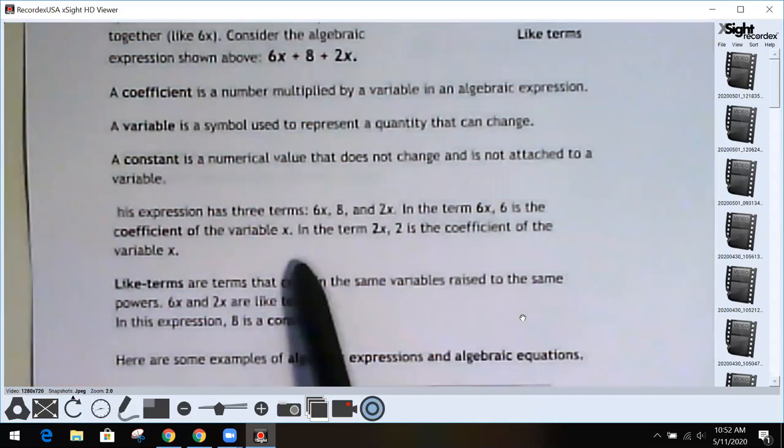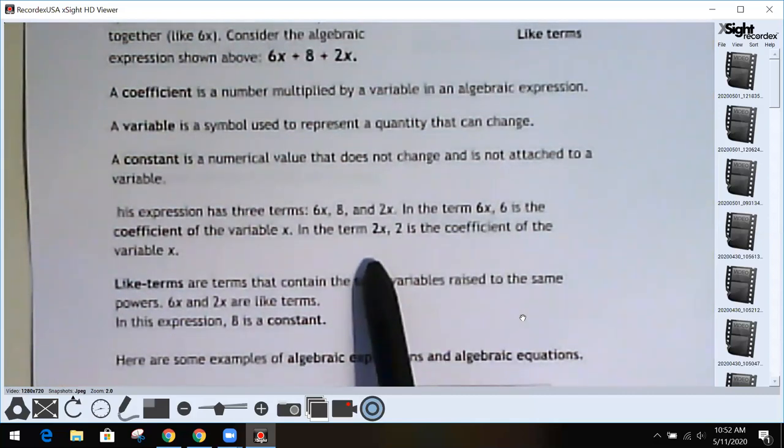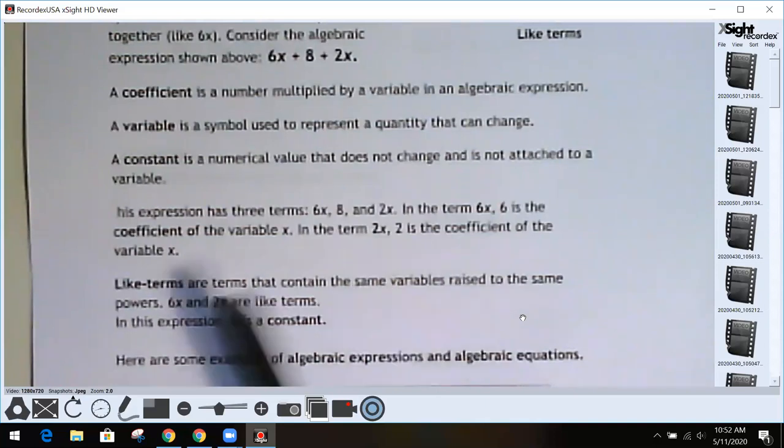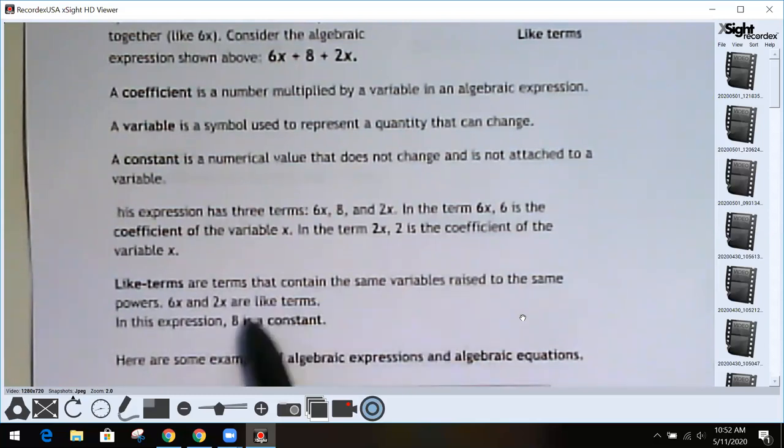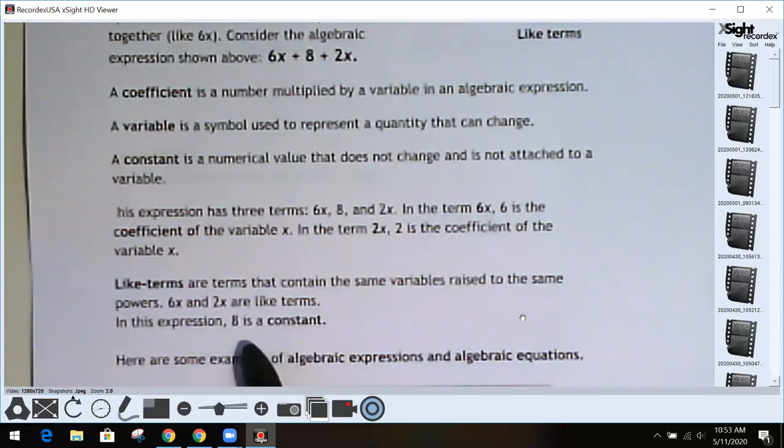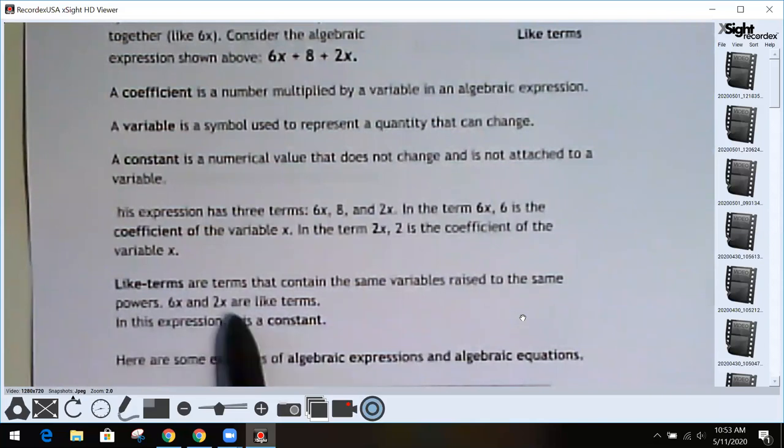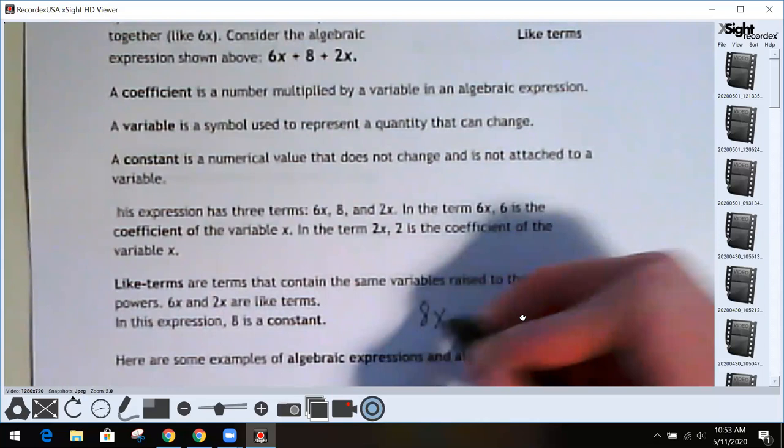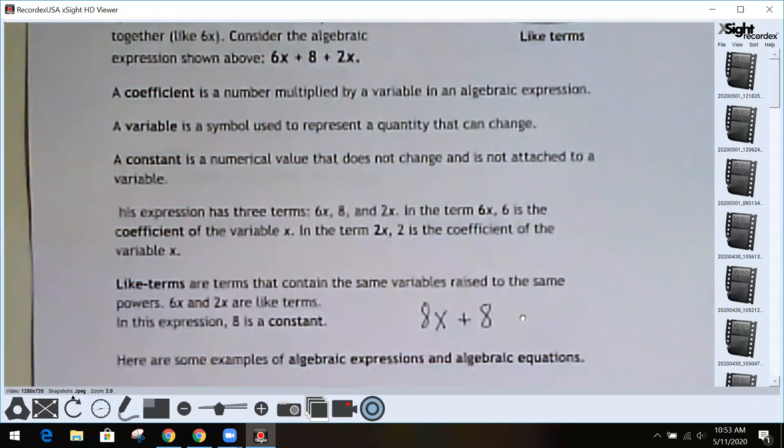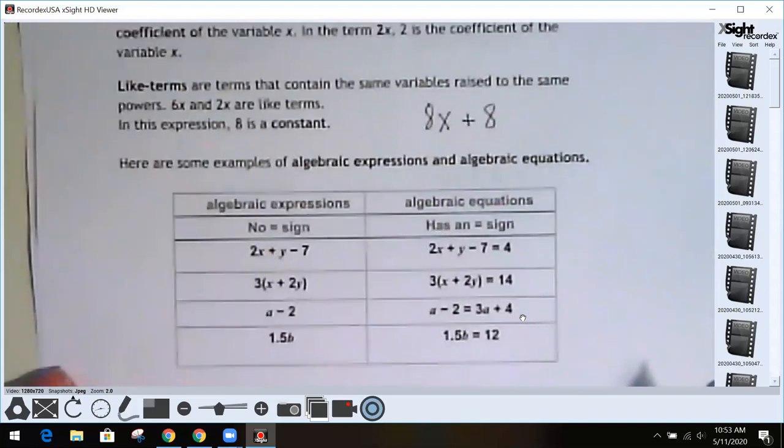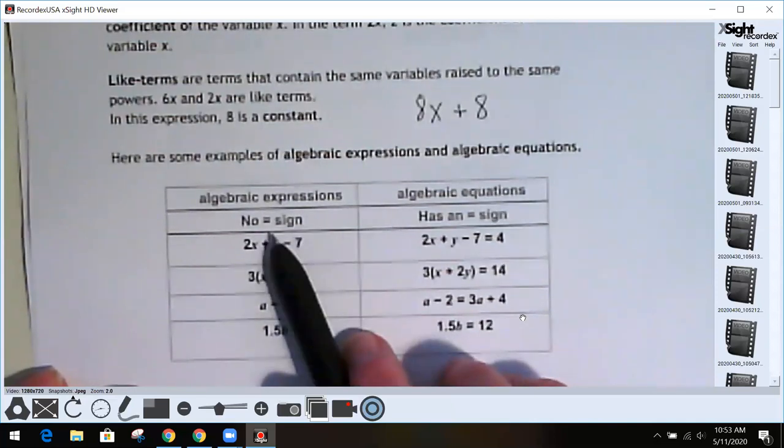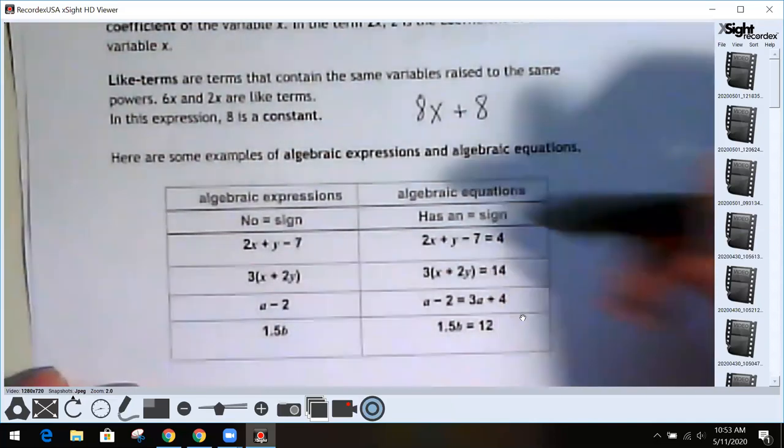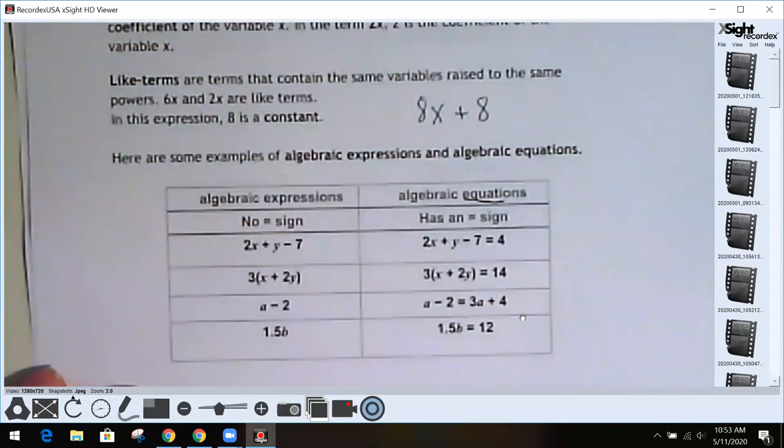So in this expression, there are three terms: 6x, 8, and 2x. 6 is the coefficient, 2 is the coefficient of 2x, and those two things can be added together because their variable is x. Like terms are terms that contain the same variables raised to the same power. So 6x and 2x are like terms. The 8 is the constant. When I add 6x and 2x, I get 8x. So this expression could be rewritten as 8x + 8. Some confusion happens—people want to make equal signs, but algebraic expressions don't have an equal sign. Equations have an equal sign. That's what 'equa' in equation stands for—it stands for the equal part of it.